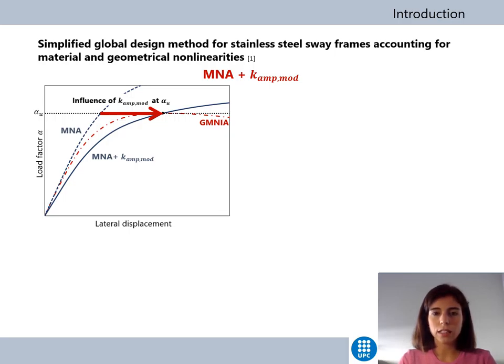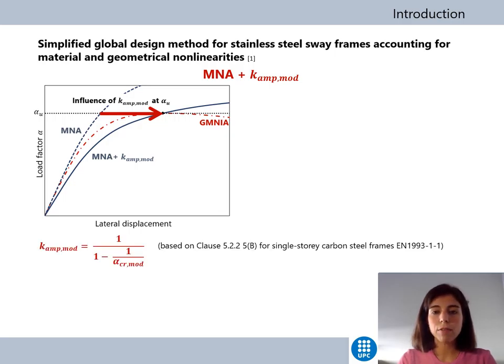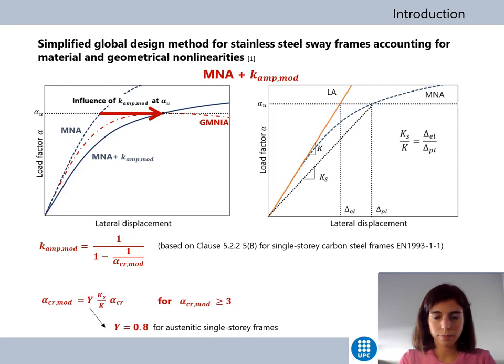The method consists of performing a first-order analysis with material nonlinearities (MNA), in which sway effects, horizontal actions, and initial sway imperfections are amplified by a factor referred to as the modified k-amp.